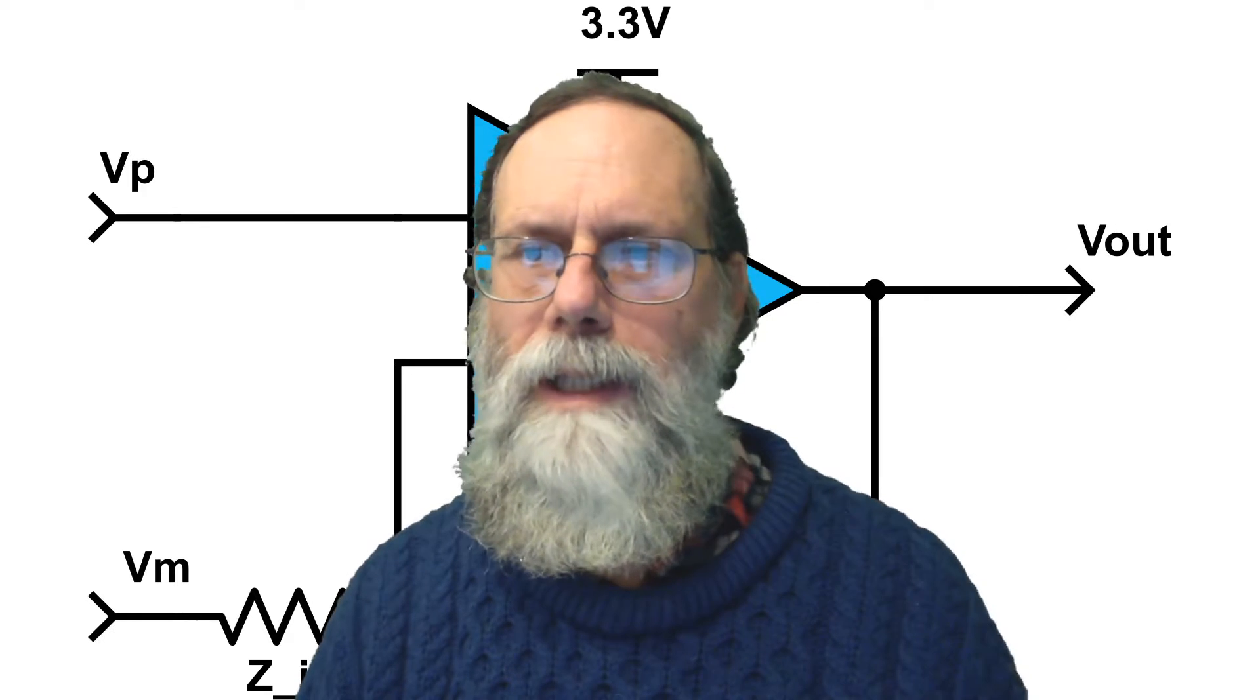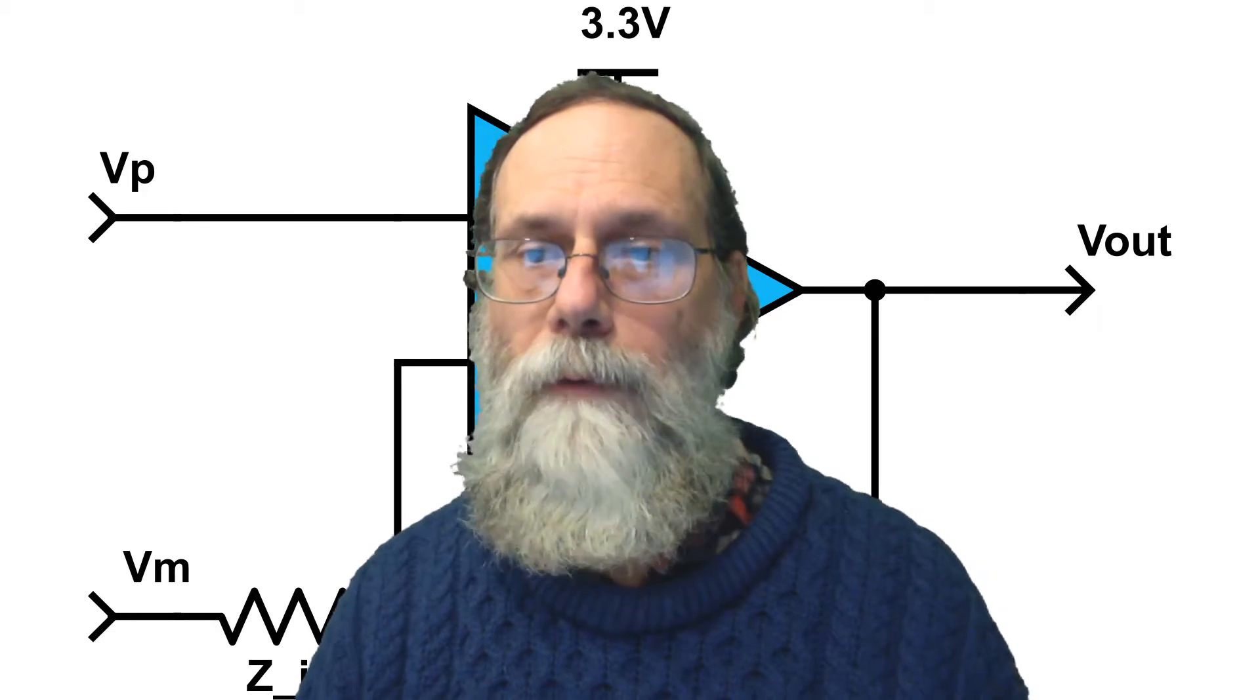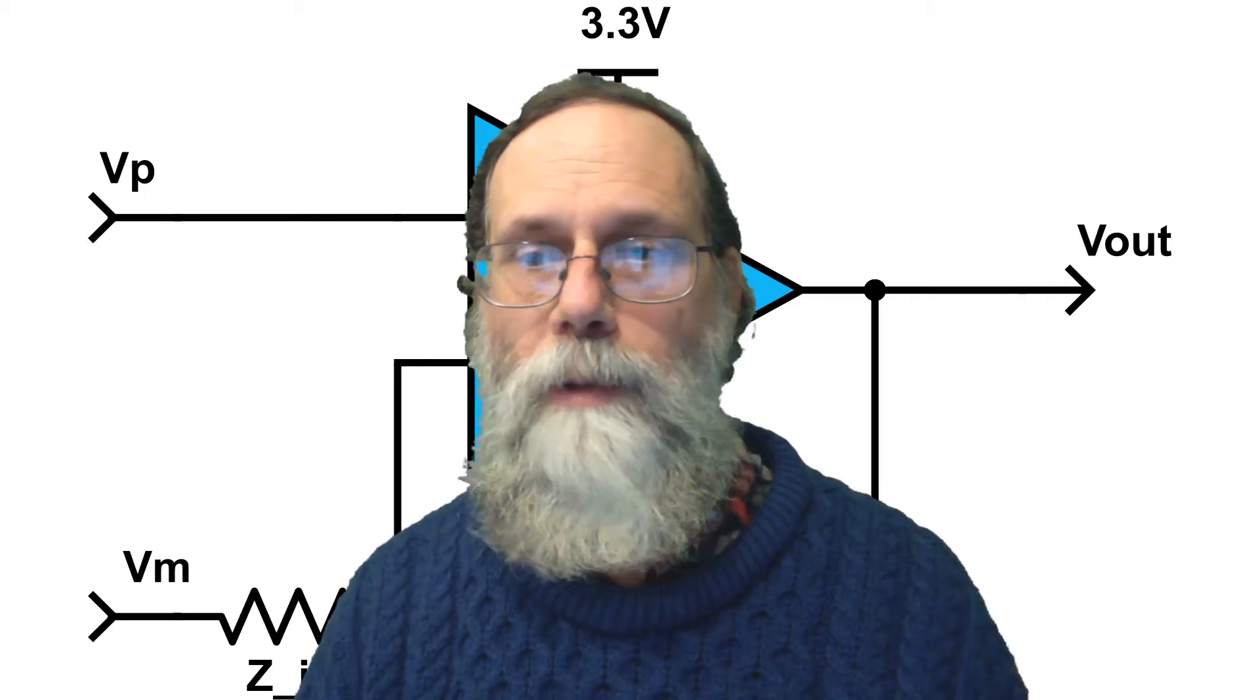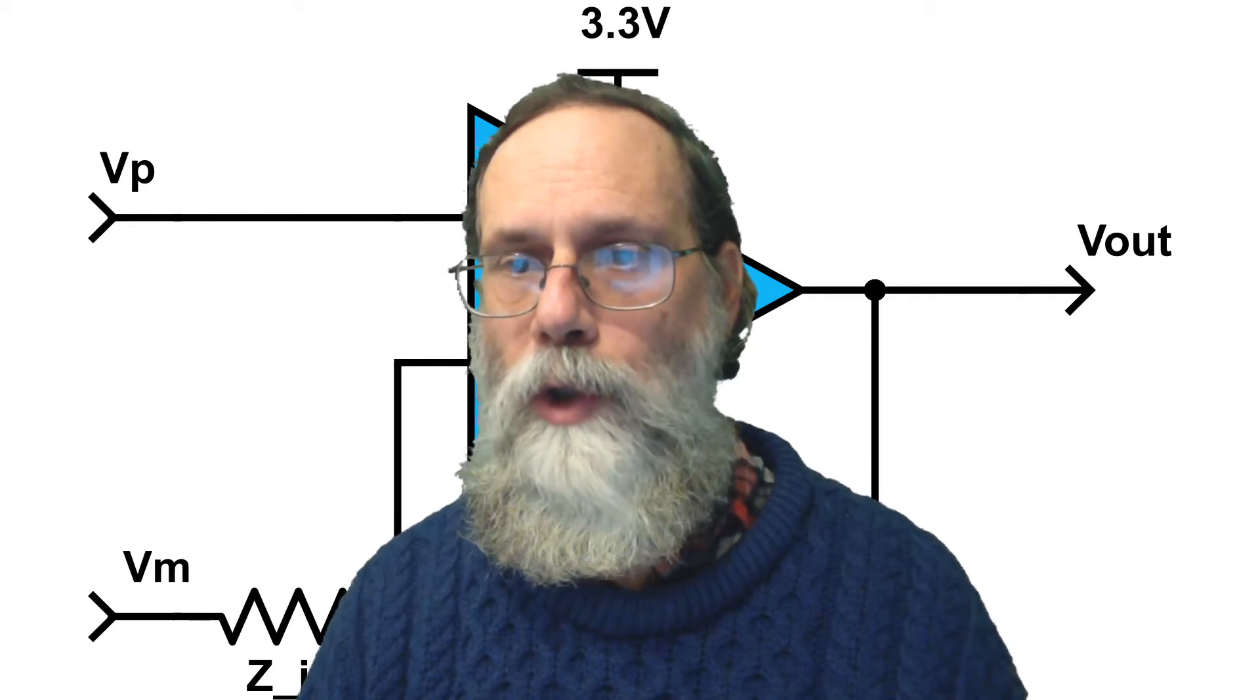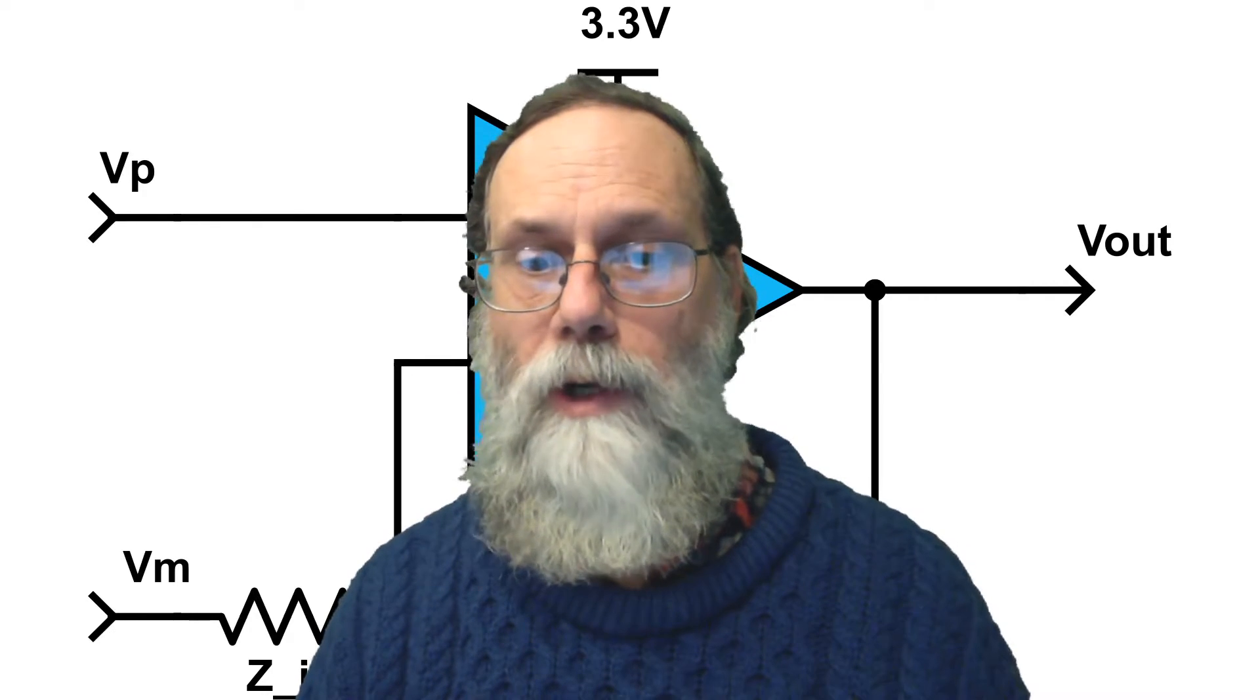This video is about building an instrumentation amplifier out of two op-amps. It corresponds to section 40.2 of the Applied Analog Electronics textbook.